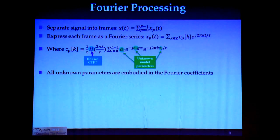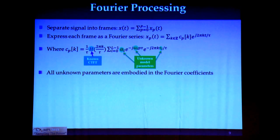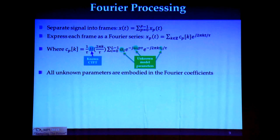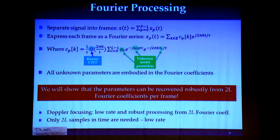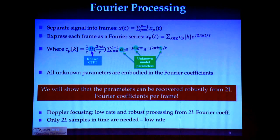As a preliminary step to Doppler focusing, we want to show how the signal's frequency information relates to these degrees of freedom. We can express our signal as a Fourier series, and we can see that each Fourier coefficient is made up of the signal's Fourier transform, with all 3L unknown parameters in green. We will show that it's enough to take 2L samples from each frame in order to completely recover the signal.